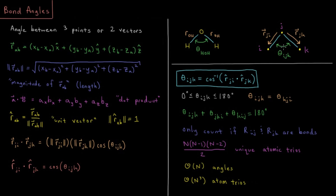So what exactly is a vector? Vector AB connecting points A and B would be the final minus initial X coordinate times the X unit vector, plus final minus initial Y coordinate — YB minus YA — times the Y unit vector, plus Z final minus Z initial times the Z unit vector. That gives you where the vector points in the X, Y, and Z directions.